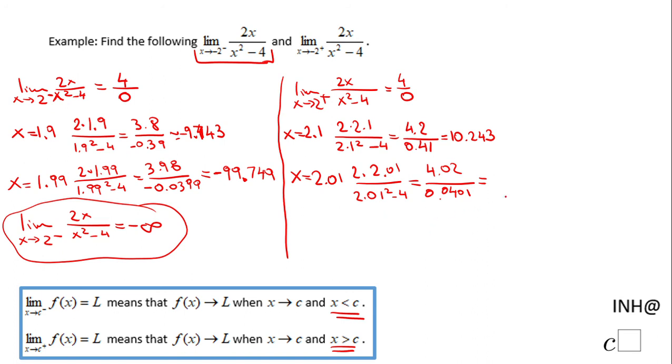And that will be 100.249. So looking at this pattern, we can say the limit when x approaches 2 plus of 2x over x squared minus 4 is positive infinity, or just infinity.